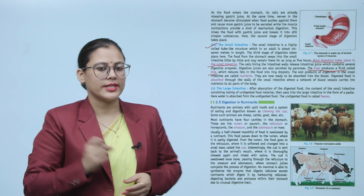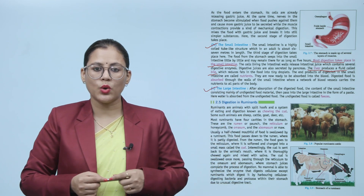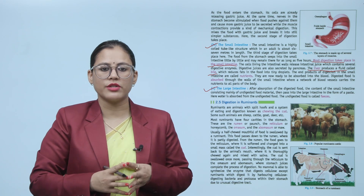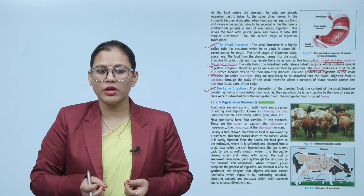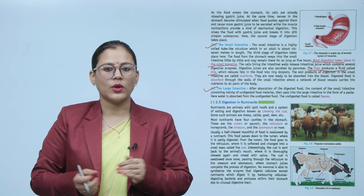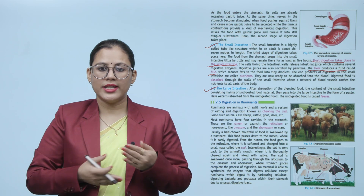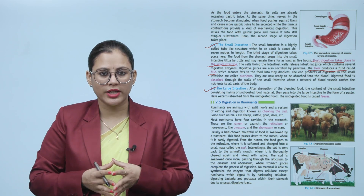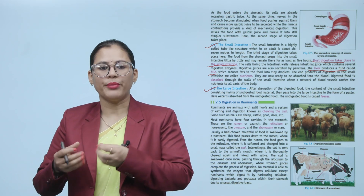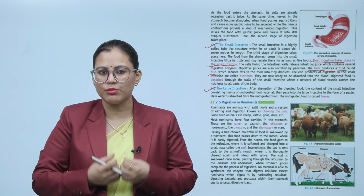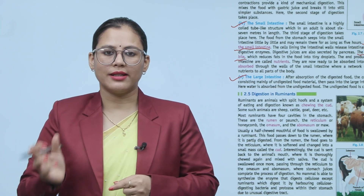Number five: the large intestine. After absorption of digested food, the content of the small intestine — consisting mainly of undigested food material — passes into the large intestine in the form of a paste. Water is absorbed from the undigested food. The remaining undigested food is called feces.